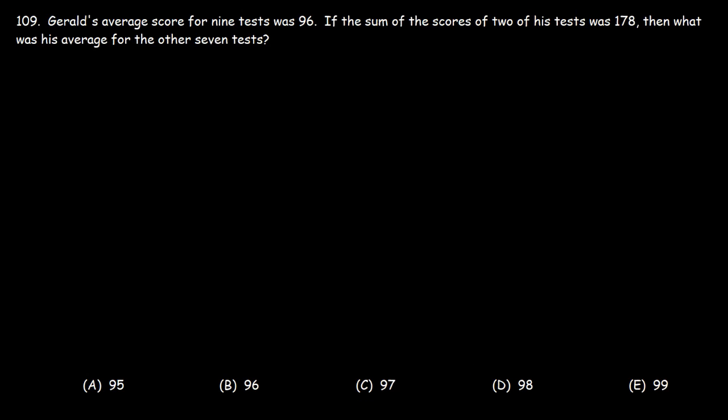Number 109. Gerald's average score for nine tests was 96. If the sum of the scores of two of his tests was 178, what was his average for the other seven tests? A9 is 96, s2 is 178, and we're looking for a7, the average for the other seven tests.